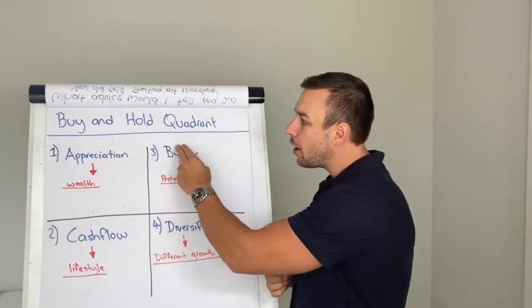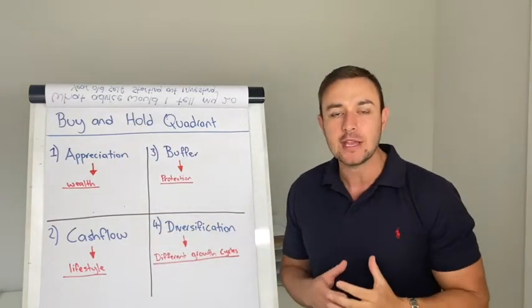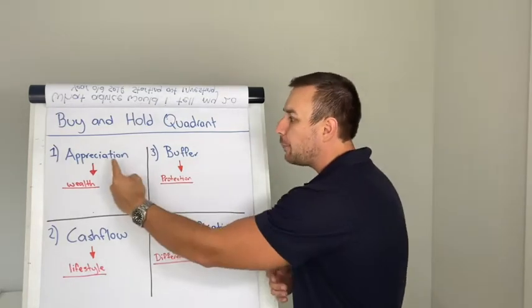So I call this the buy and hold quadrant. You need to be looking at this when it comes to building a portfolio. Number one, appreciation.